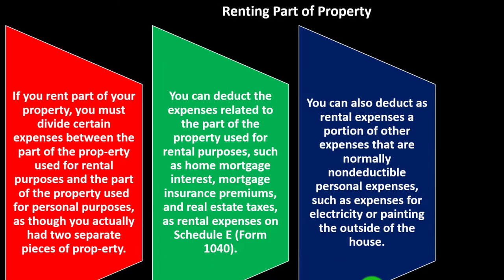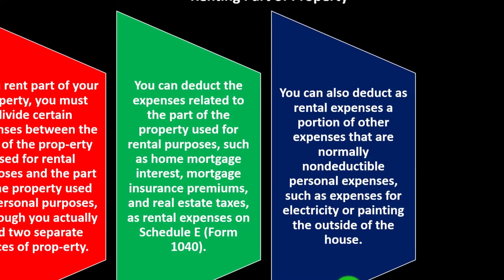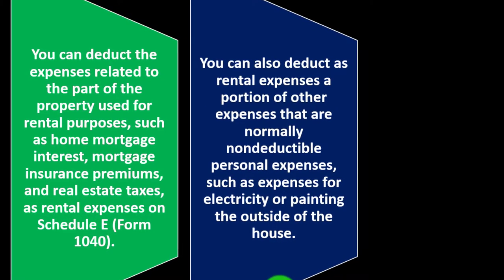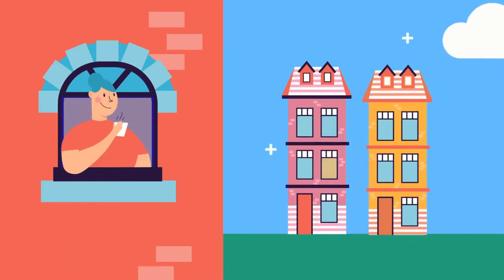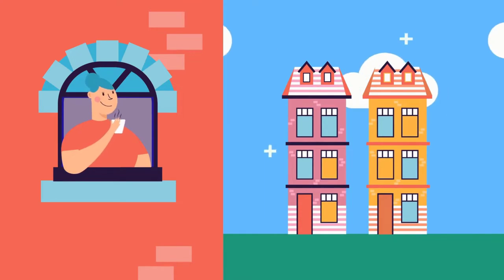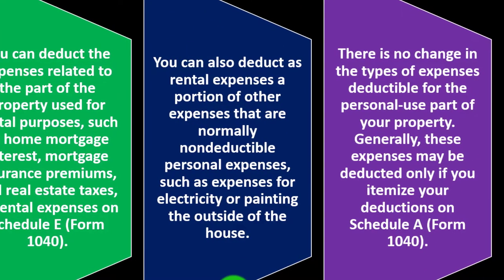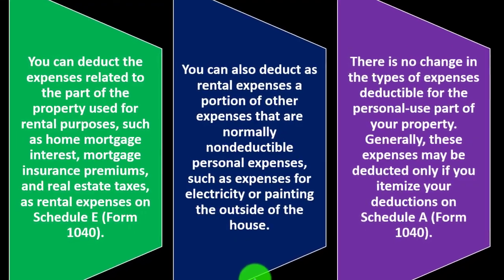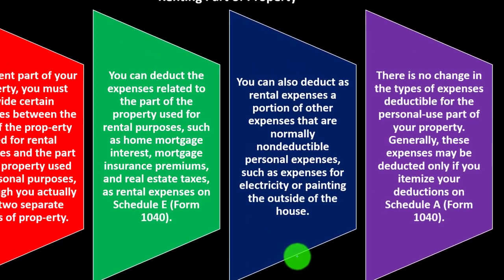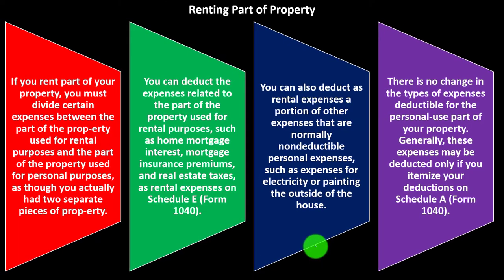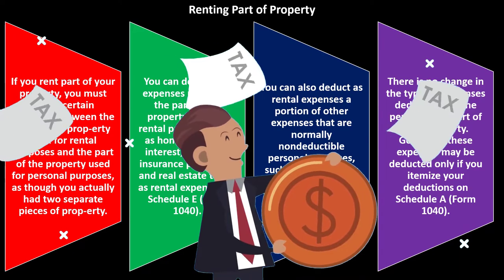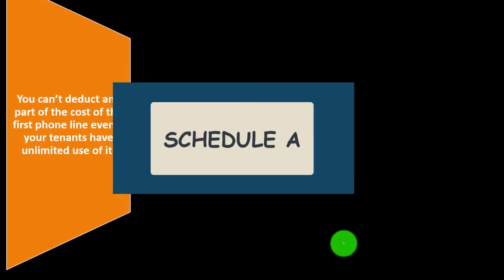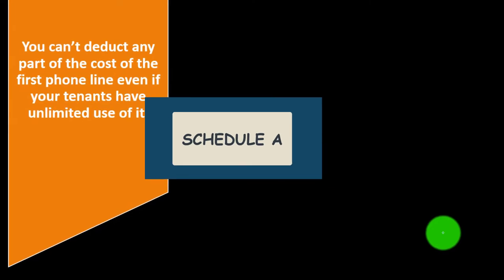You can also deduct as rental expenses a portion of other expenses that are normally non-deductible personal expenses, such as expenses for electricity or painting the outside of the house. These are things you couldn't deduct for a principal residence, but if it's rental property you'd get to deduct part of that. There is no change in the type of expenses deductible for the personal use part of the property — generally, those expenses may only be deducted if you itemize deductions on Schedule A.